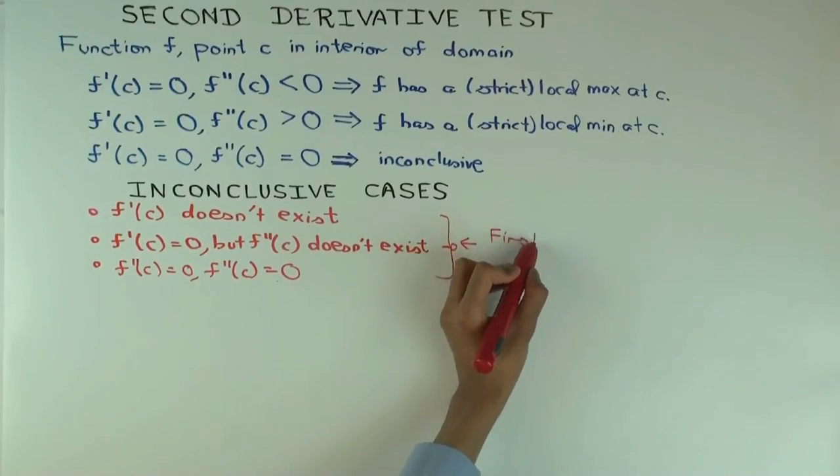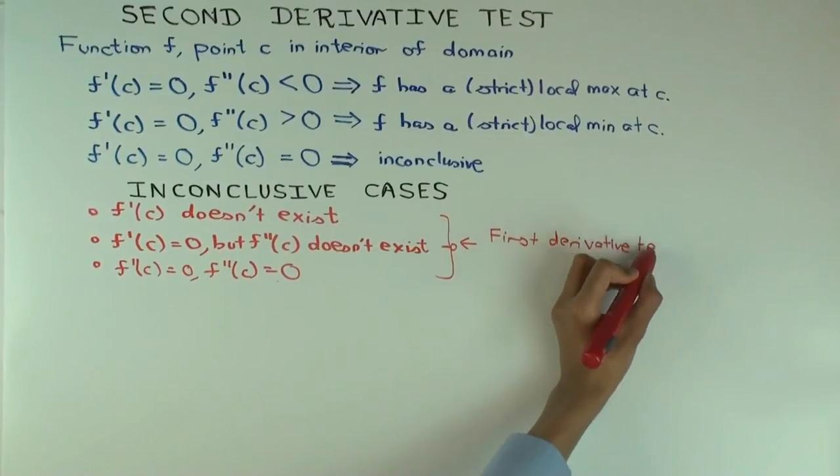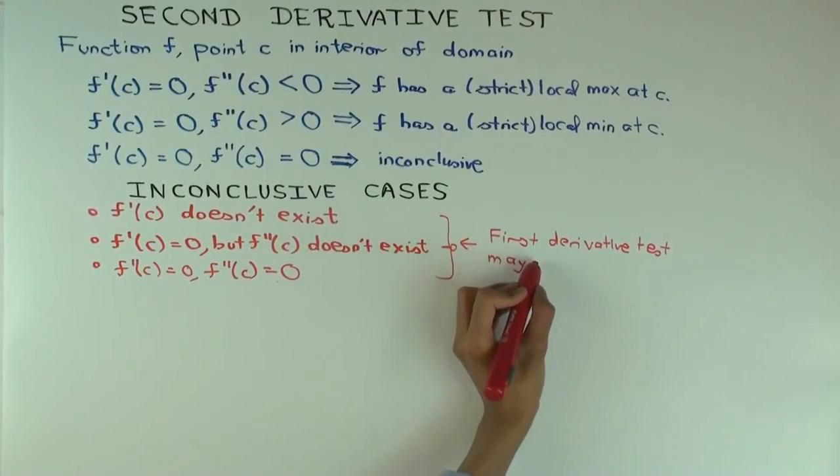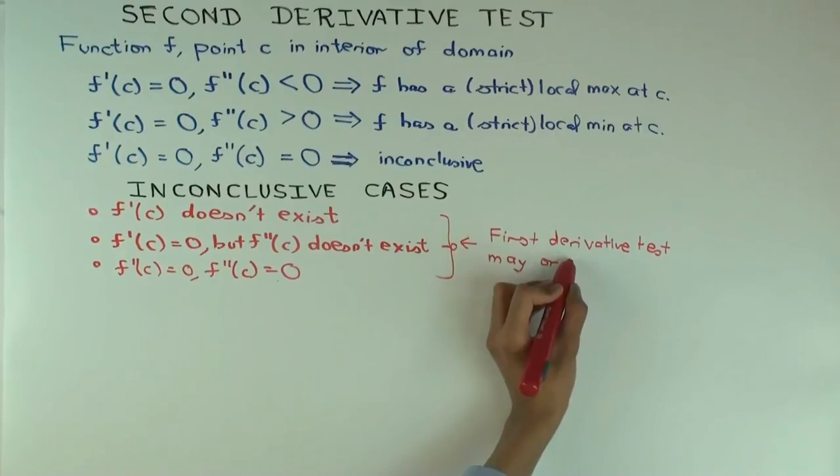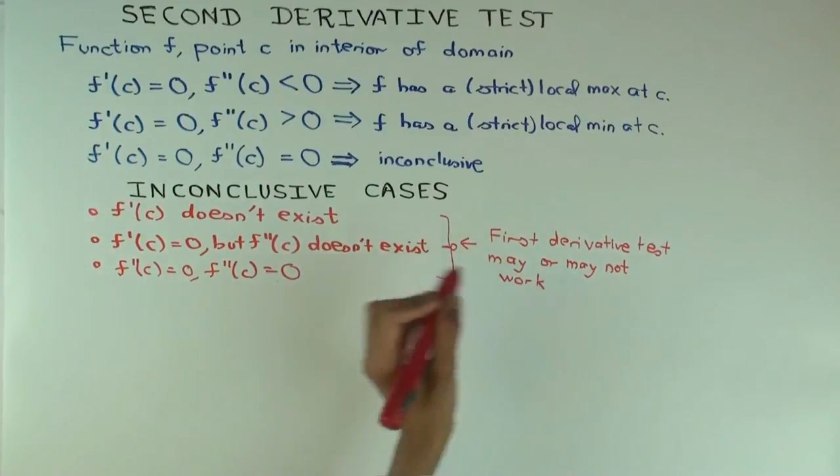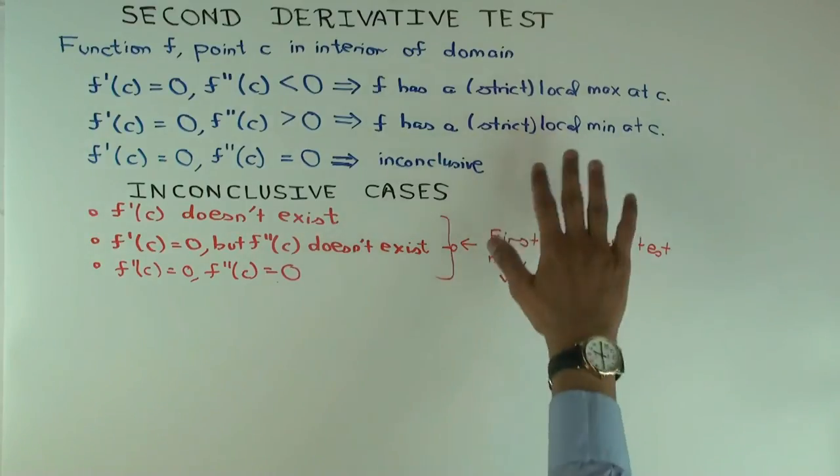Okay. First derivative test may or may not work. We don't know. Okay. Another thing I want to say is, from the point of view of conclusions, the second derivative test can never conclusively establish that you don't have a local extreme value. Okay?